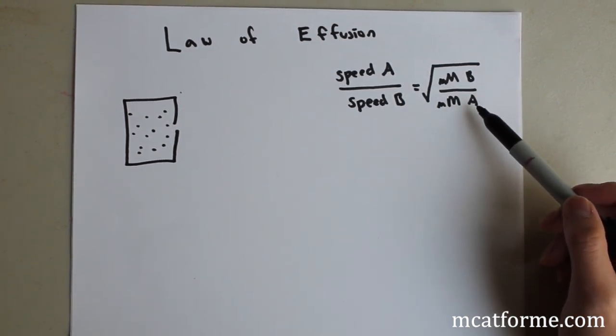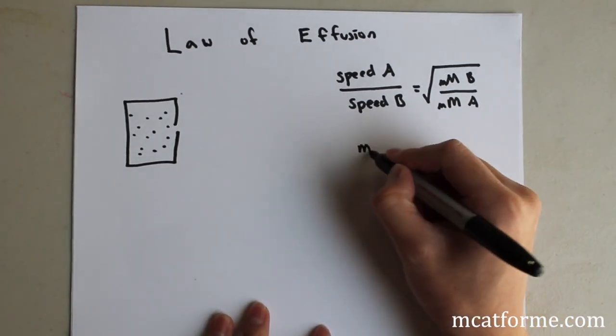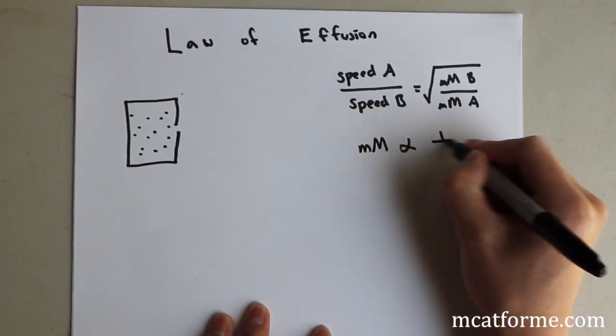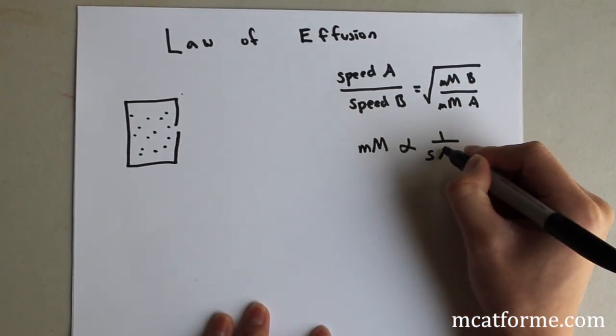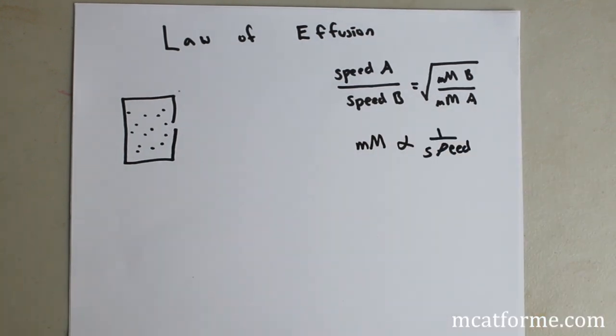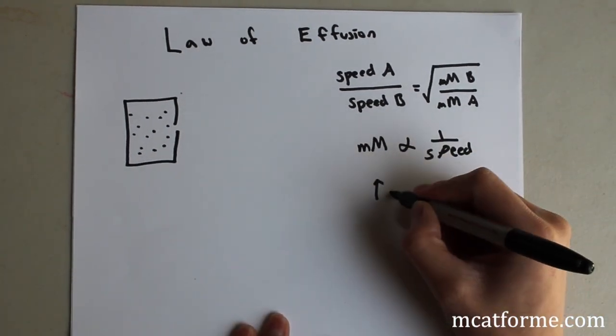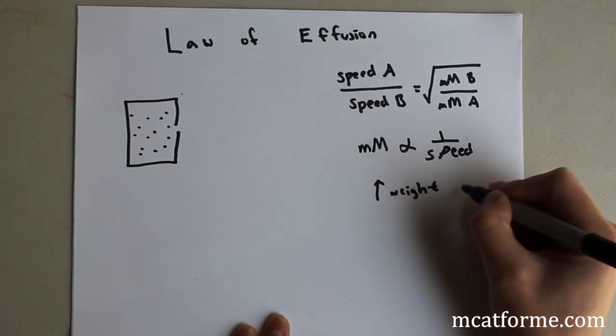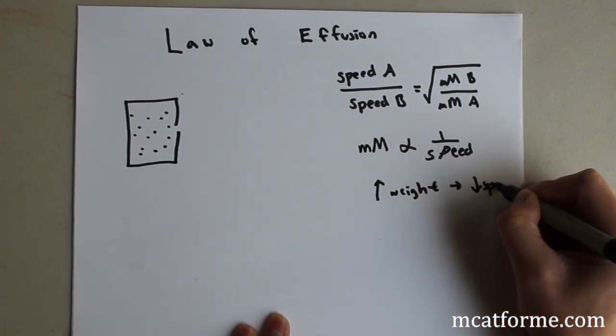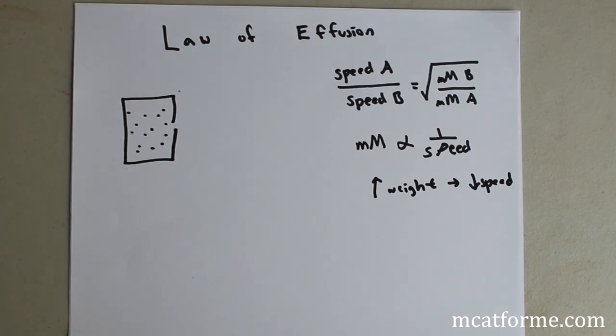So what does this show us? This shows us that the molar mass is inversely proportional to the speed. So that would be if we increase the weight of something, or increase the molar mass, this would in turn decrease the speed. So bigger objects move slower. And I guess that is intuitive in other cases.